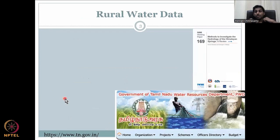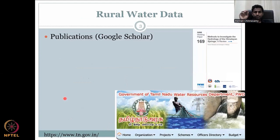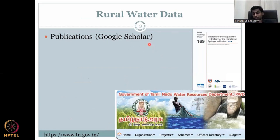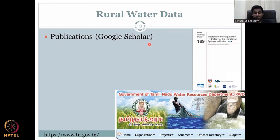Without further ado, the first rural water resource source we'll look at is publications. Publications are written by scientific scholars and students who are active in research, and most are found in Google Scholar. While searching for the data you need, you can go to Google Scholar, which is the part of Google that focuses only on papers and journal articles.